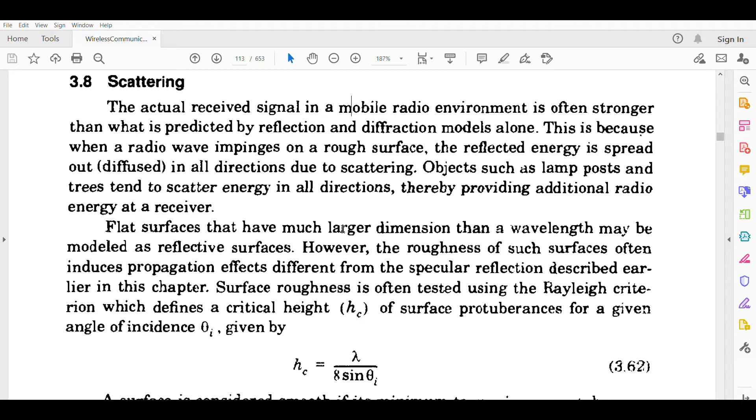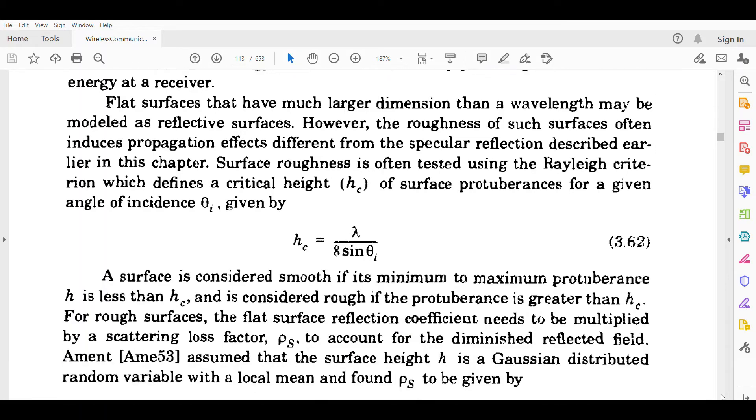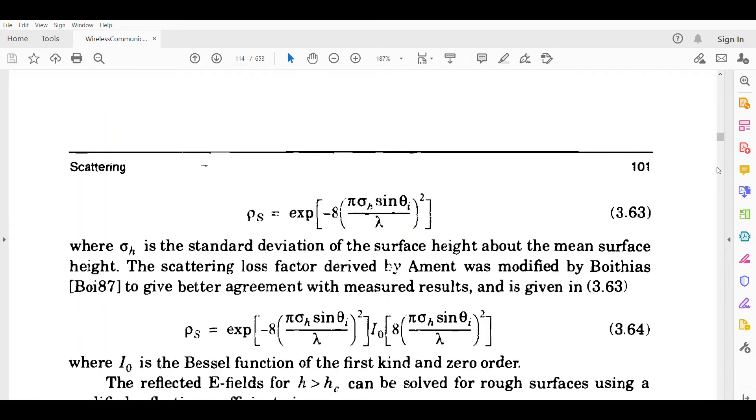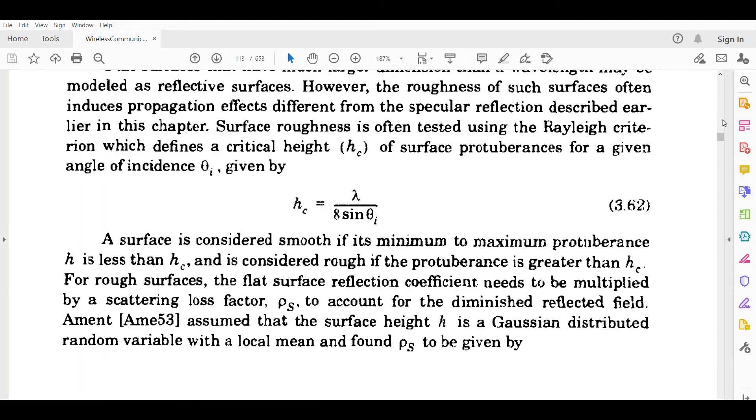Flat surfaces that have much larger dimensions than a wavelength may be modeled as reflective surfaces. However, the roughness of these surfaces often induces propagation effects different from the specular reflection described earlier. Surface roughness is often tested using the Rayleigh criteria, which defines a critical height h_c of a surface protuberance for a given angle of incidence theta_i. A surface is considered smooth if its minimum to maximum protuberance h is less than h_c, and is considered rough if the protuberance is greater than h_c.